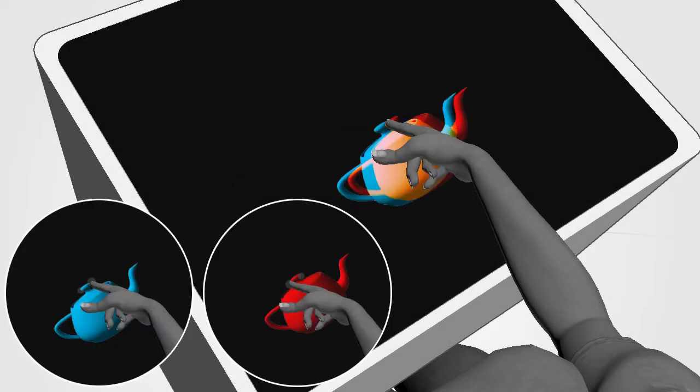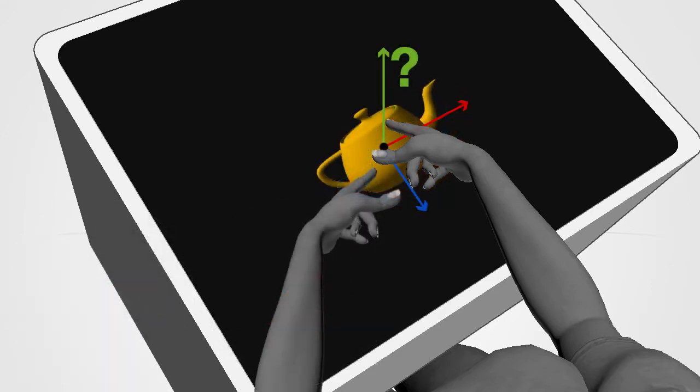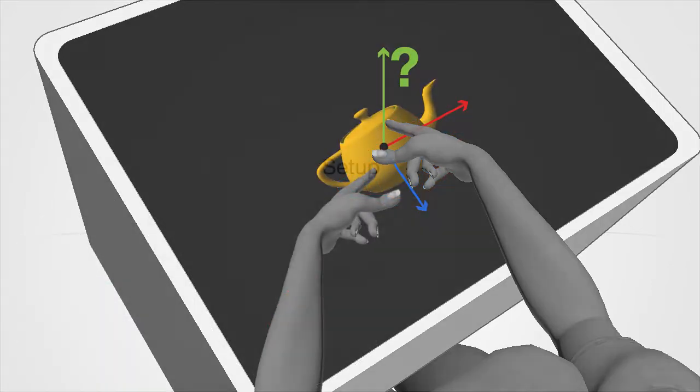Selection may be ambiguous and 3D interaction tasks may be hard to complete. With our setup, the user directly interacts on the 2D touchscreen.